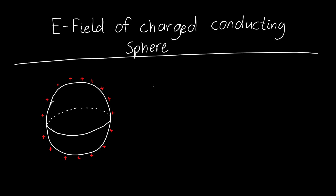In this video we're going to learn how to calculate the electric field due to a charged conducting sphere. Let's say we've got a sphere with a radius of big R and a charge of plus Q on it — that's the total charge spread over the sphere. Initially we want to find the electric field inside the sphere, beneath the surface.